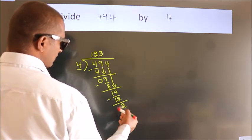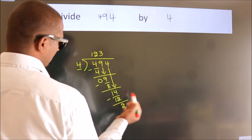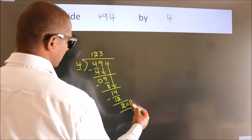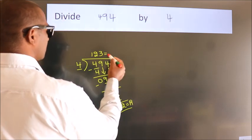After this, no more numbers to bring down. So we stop here. This is our remainder. This is our quotient.